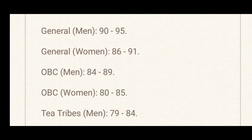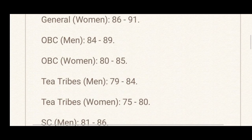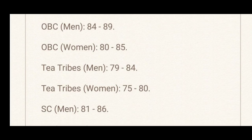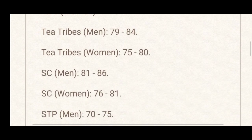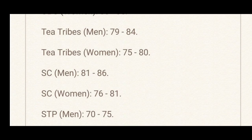The expected cutoffs are as follows: General Men: 90–95, General Women: 86–91, OBC Men: 84–89, OBC Women: 80–85, Scheduled Tribes Men: 79–84, Scheduled Tribes Women: 75–80, Scheduled Caste Men: 81–86.